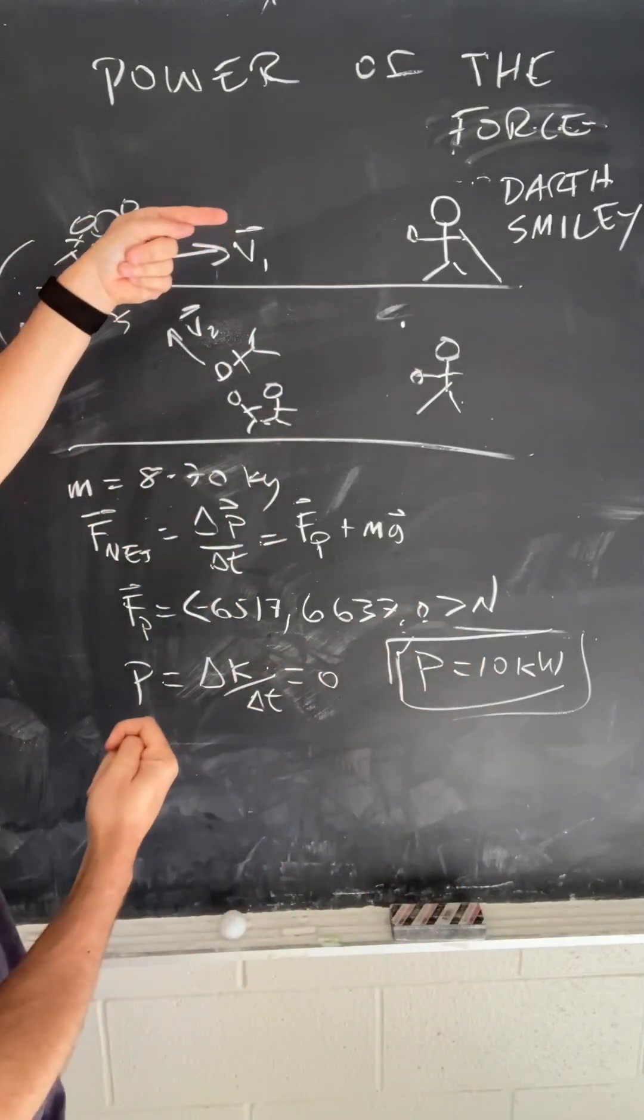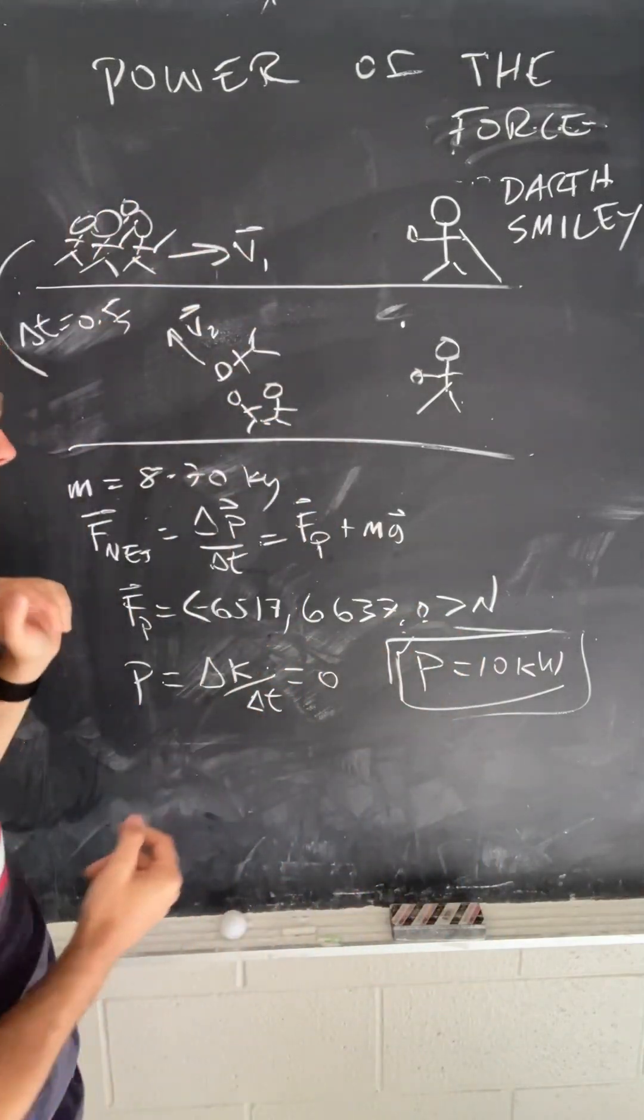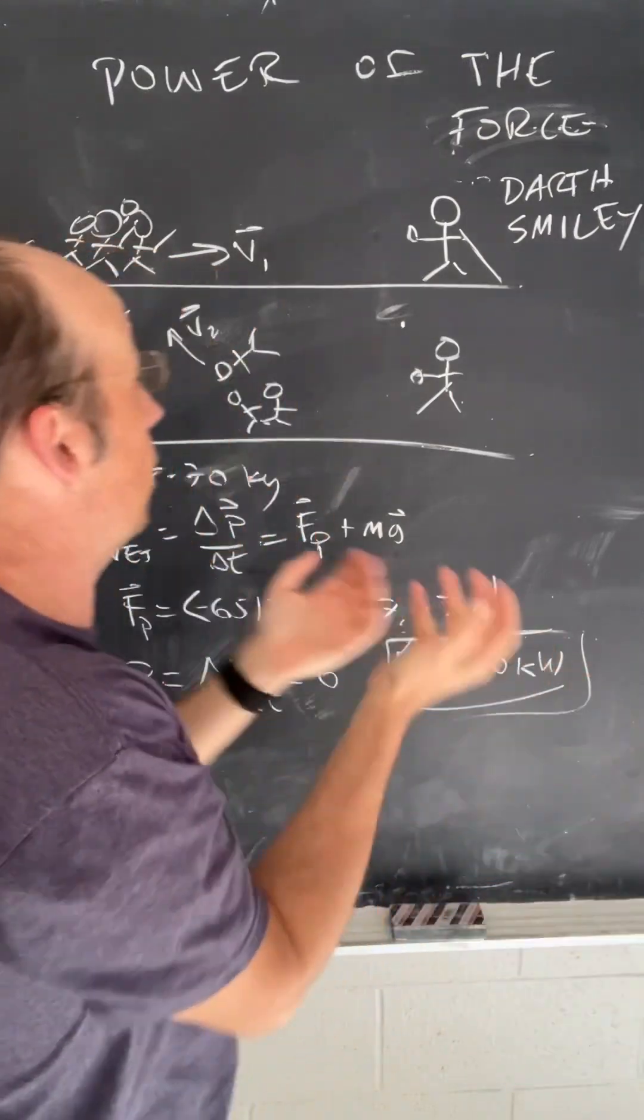So, if we know the initial velocity, we can estimate that. The mass, I can say there's eight of them, there's 70 kilograms.